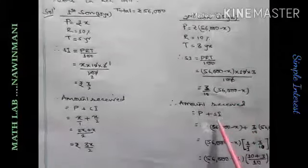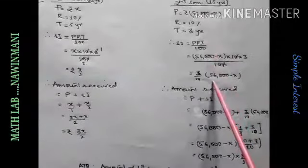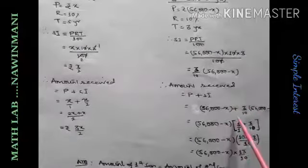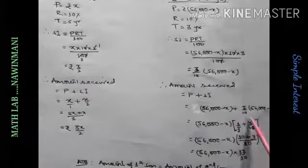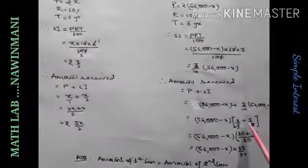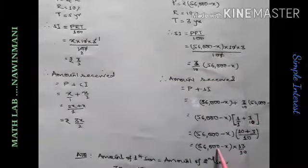The amount will be P plus SI. P is this much. SI is this much. Take common. Then this will be 1 by 1 plus 3 by 10. Take LCM. It will be 13 by 10 into 56,000 minus X.